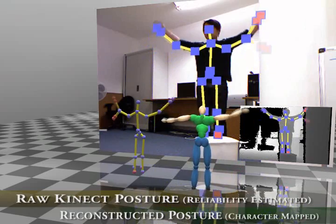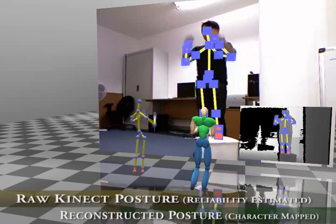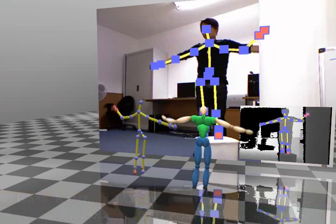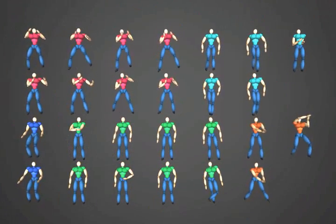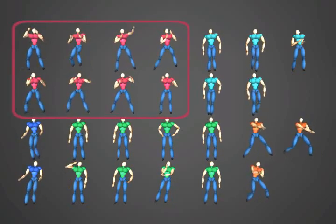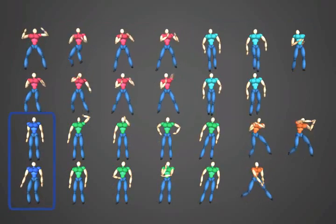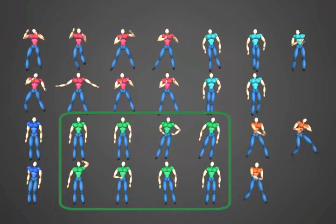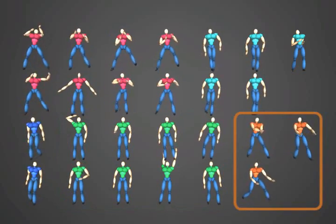We map a character onto the reconstructed posture for easier visualization. We use a motion database to reconstruct the Kinect's postures. It consists of boxing, walking, object handling, upper body movement, and sword fighting motions.